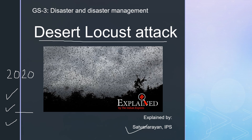You all must have seen images on social media and in newspapers, and there were some videos as well. This is directly related to our syllabus in Paper 3 of GS under the heading of Disaster and Disaster Management. We can categorize the desert locust attack as a natural disaster. In this video we will try to understand what desert locusts are, how they get developed, how swarms are generated, how they travel, the challenge they pose to farmers and governments, and how we can tackle them. This editorial was published in the Indian Express newspaper.